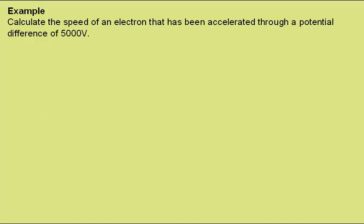Let's run through an example. Calculate the speed of an electron that has been accelerated through a potential difference of 5000 volts.